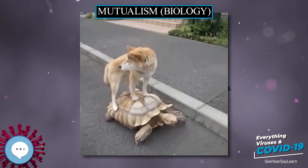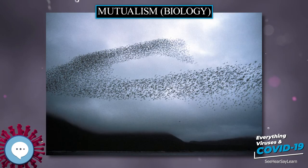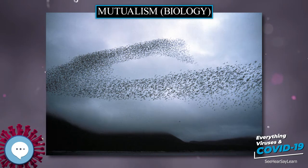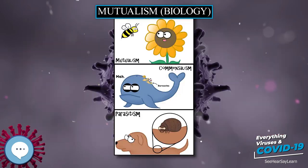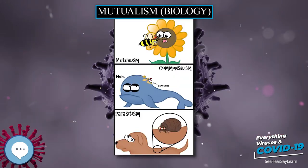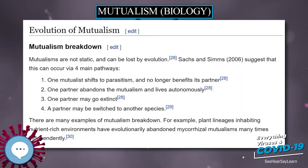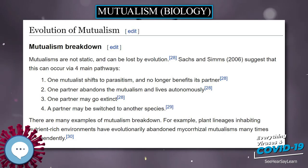Prominent examples include most vascular plants engaged in mutualistic interactions with mycorrhizae, flowering plants being pollinated by animals, vascular plants being dispersed by animals, and corals with zooxanthellae, among many others.